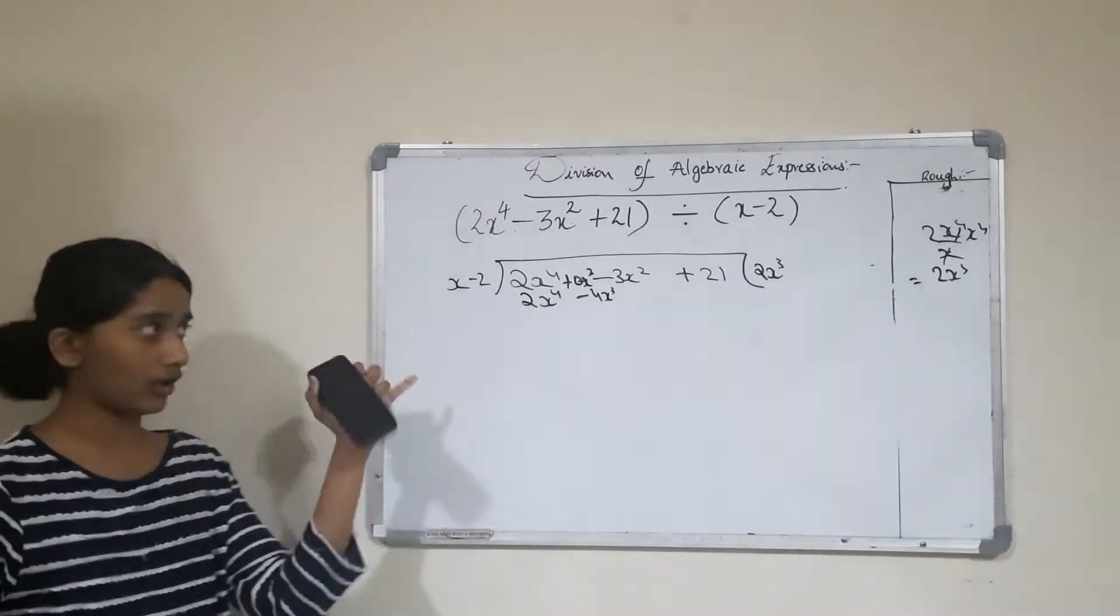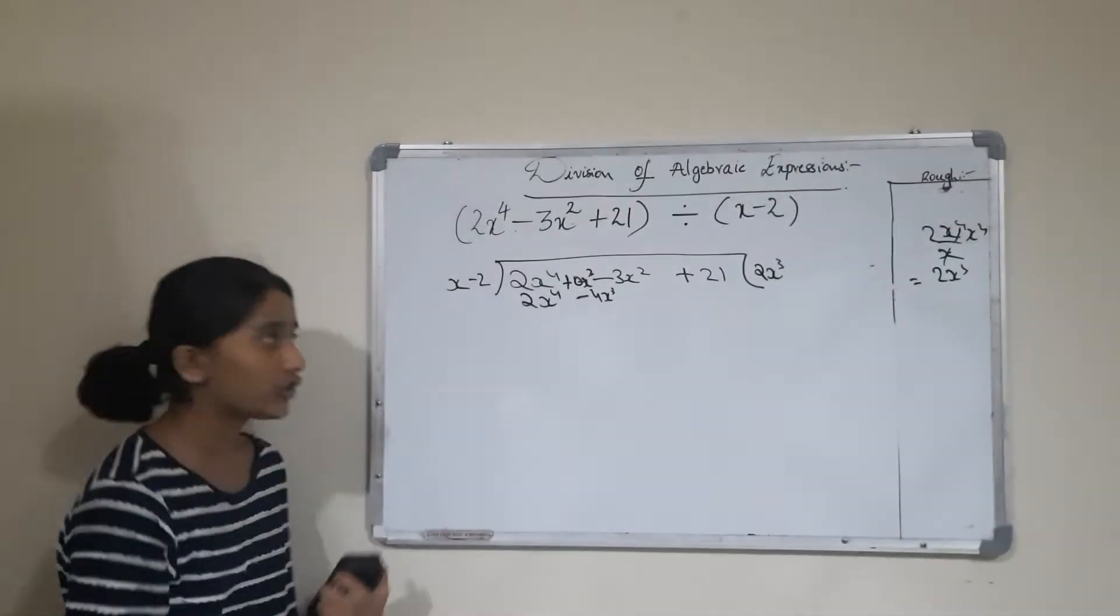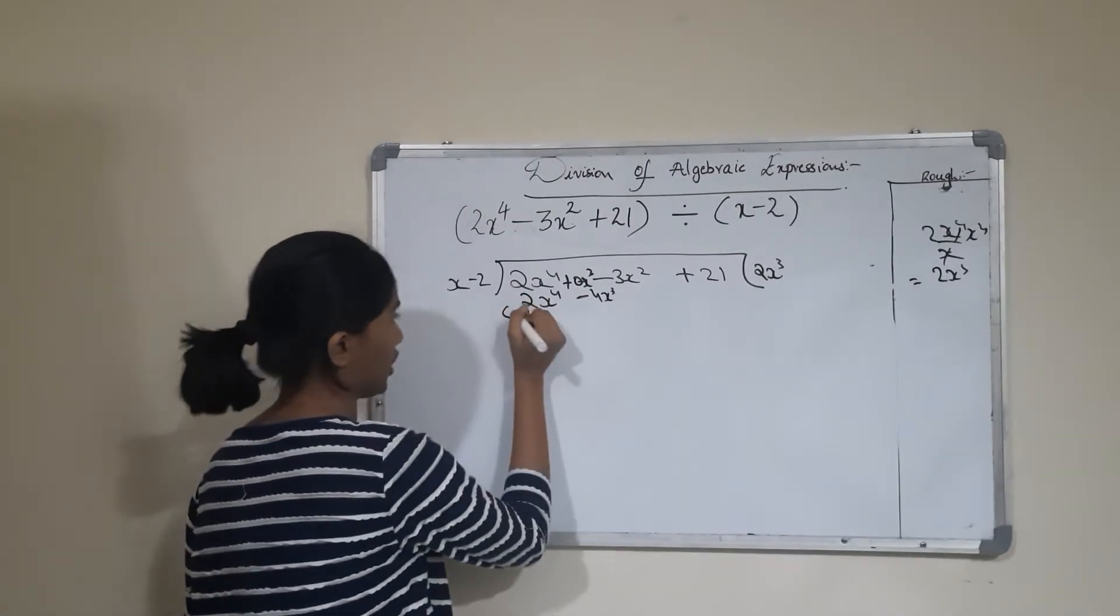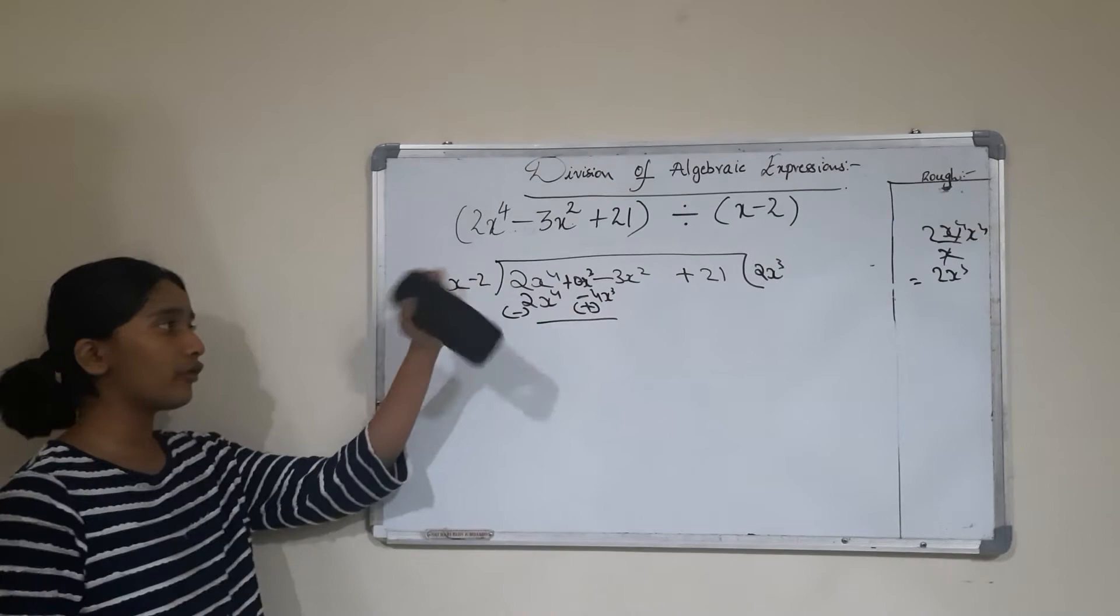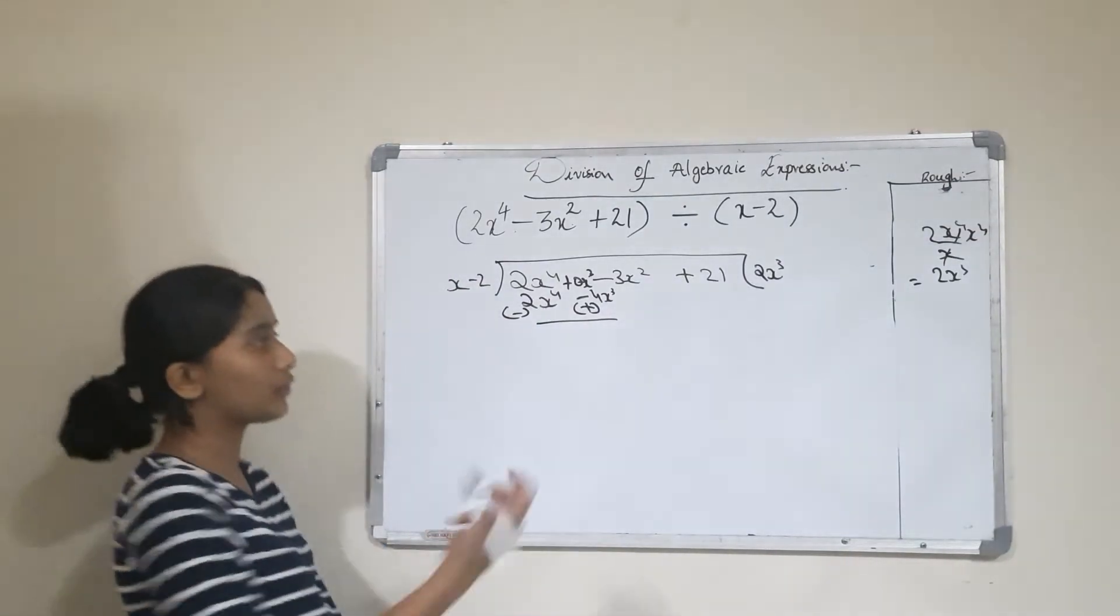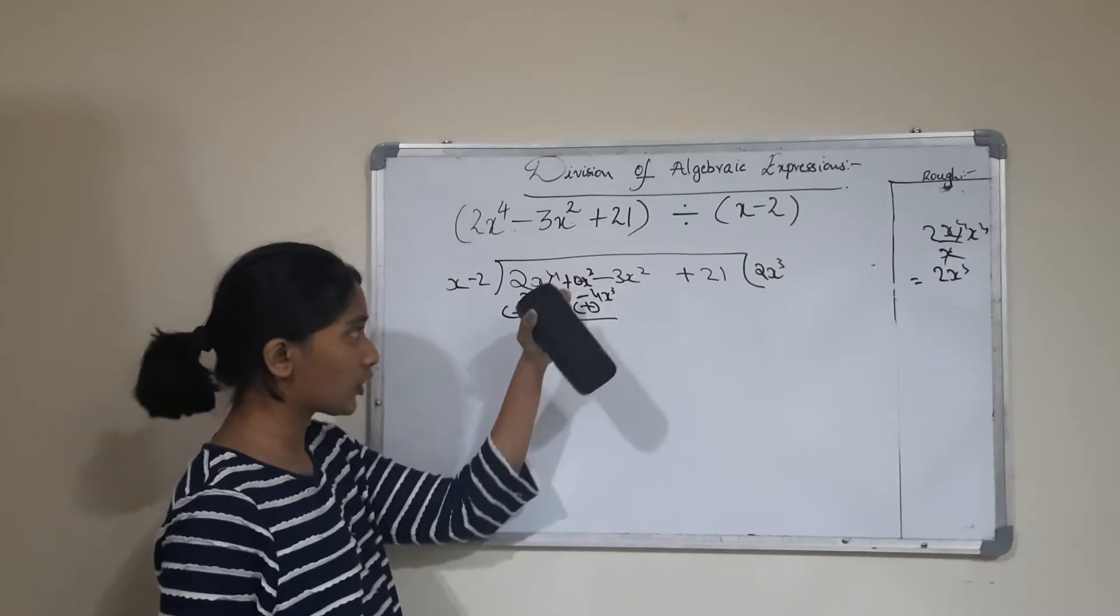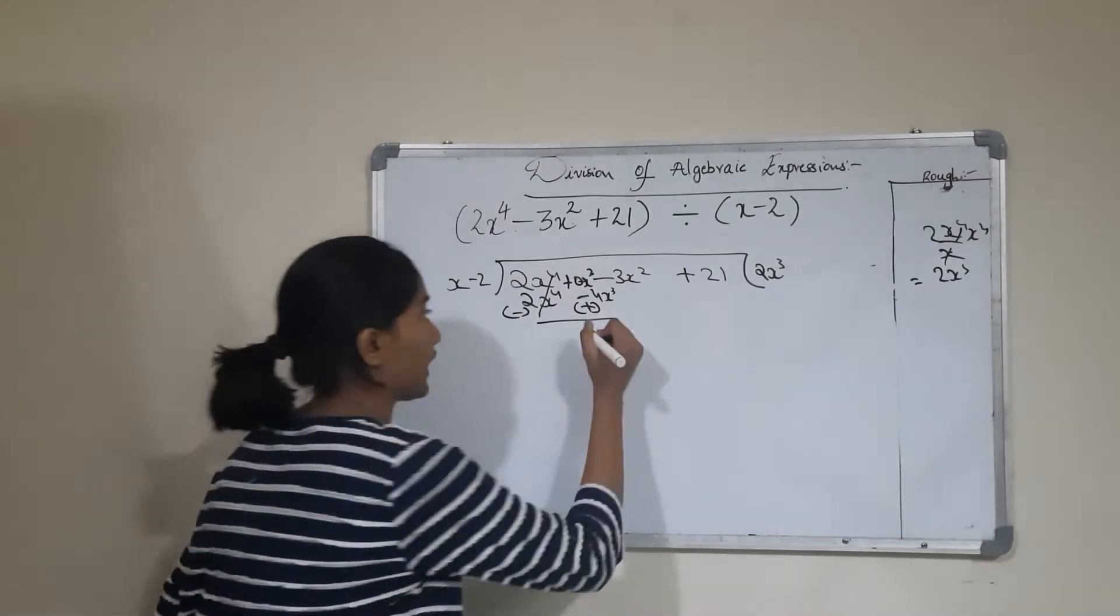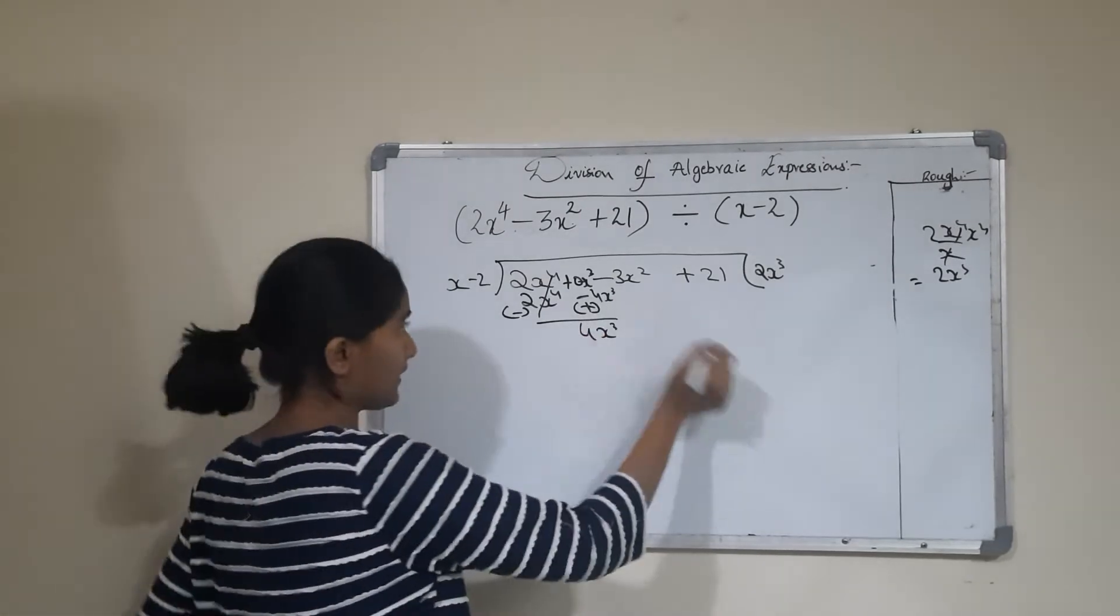Now subtract these terms. When we subtract, the signs change. 2x^4 minus 2x^4 equals 0, so I'll cross it out. 0x^3 plus 4x^3 equals 4x^3. Now bring down -3x^2.